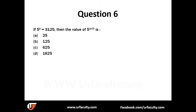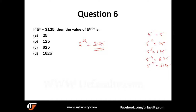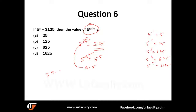Next question: 5 to the power of a equals 3125. If you know the powers of 5 — 5¹=5, 5²=25, 5³=125, 5⁴=625, 5⁵=3125 — then 5 to the power of a equals 5 to the power of 5, so a equals 5. They are asking for the value of 5a minus 3, and since a equals 5, we can now evaluate that.